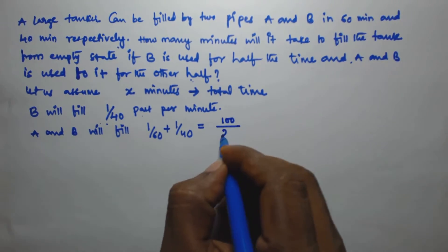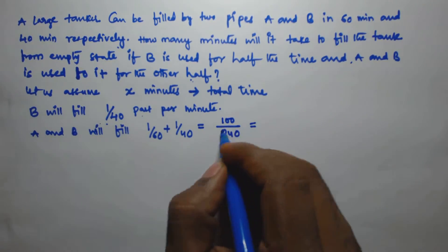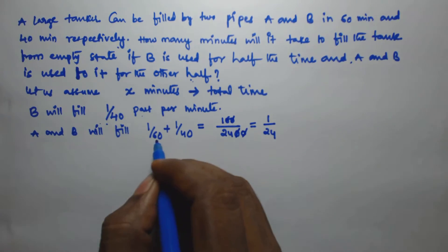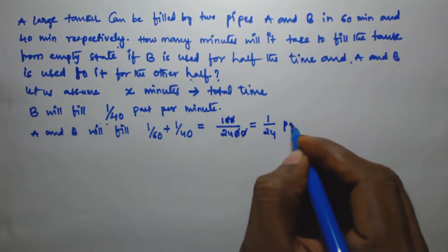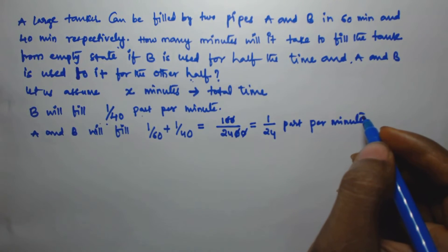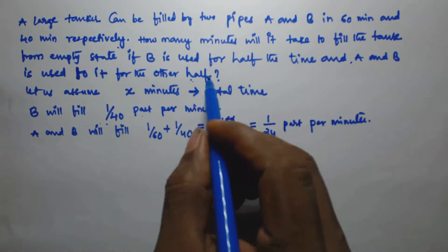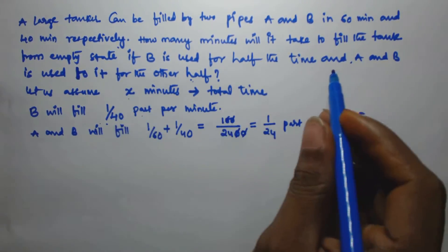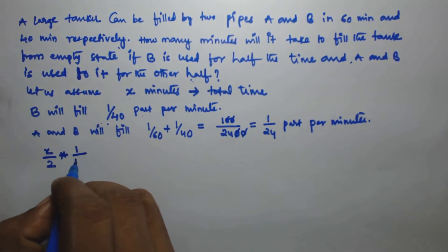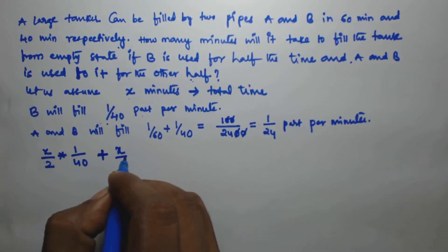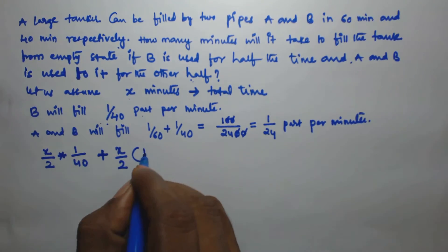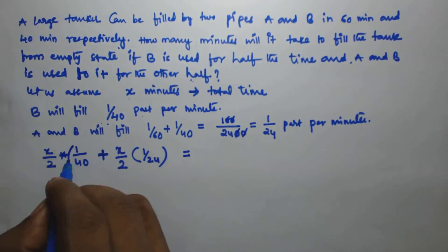A and B together fill 1/60 + 1/40, which equals (40 + 60) / (60 × 40) = 100/2400 = 1/24th part per minute. So A and B together will fill 1/24th part of the tank per minute.